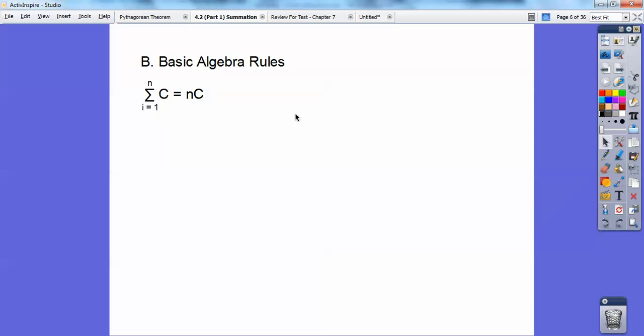If you have the summation of just some constant, of i equal 1 to n, that just means you add up that constant n times. So for example, if I had the summation of 2, i equal 1 to 10, that just means 2 plus 2 plus 2, 10 times, which is just 10 times 2 or 20. So if you have a summation of some constant up to that number, you just multiply those numbers.